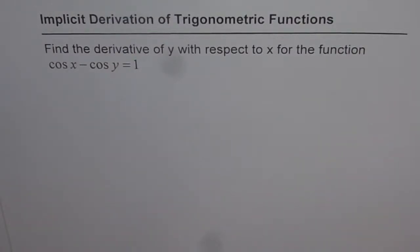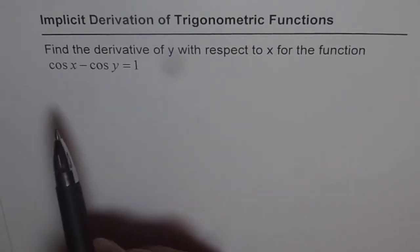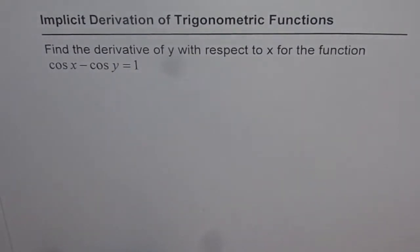Here is an application of implicit derivation on trigonometric functions. The question is: find the derivative of y with respect to x for the function cos x minus cos y equals 1.